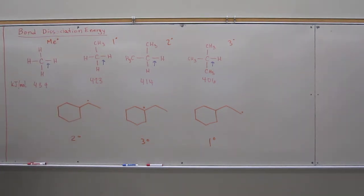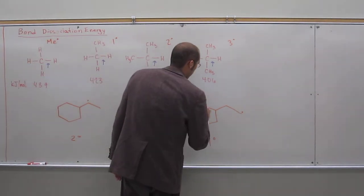And remember, the radical stability mirrors carbocation stability, right? So which one of these is the least stable? Primary. Primary. Yeah, so this is the least, right?